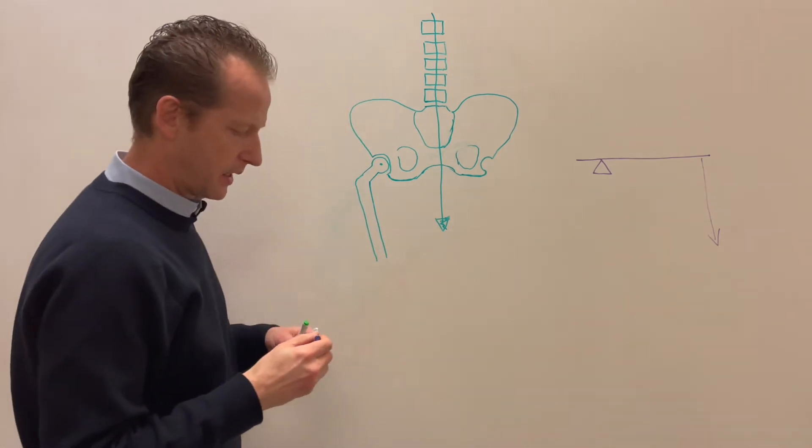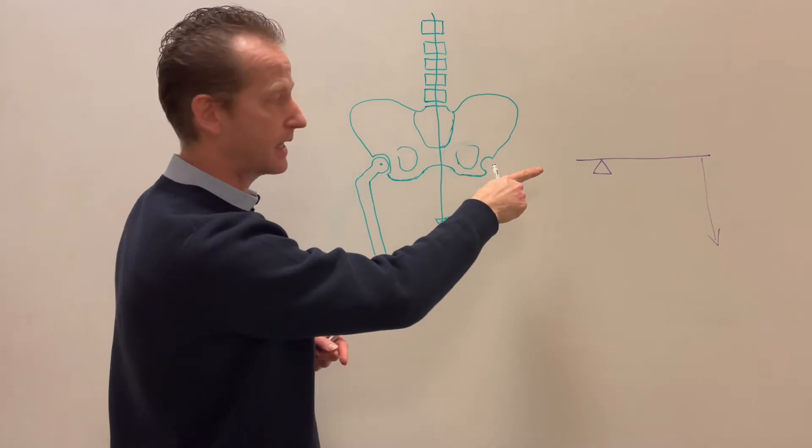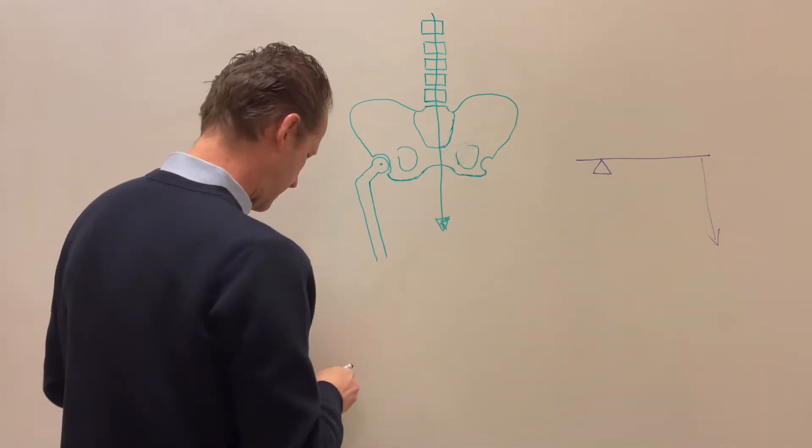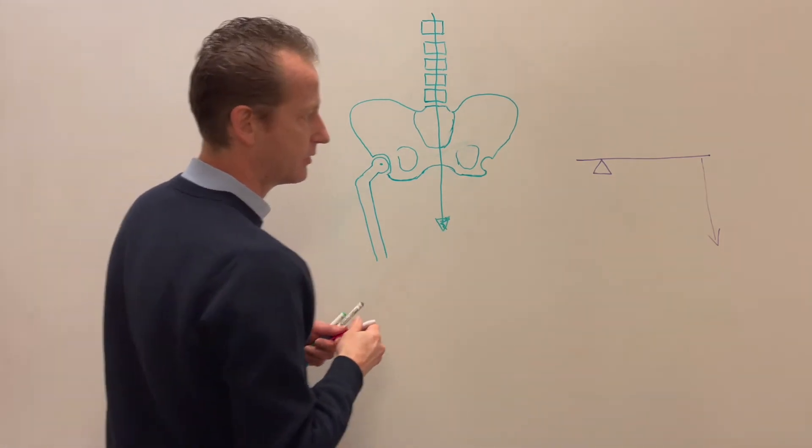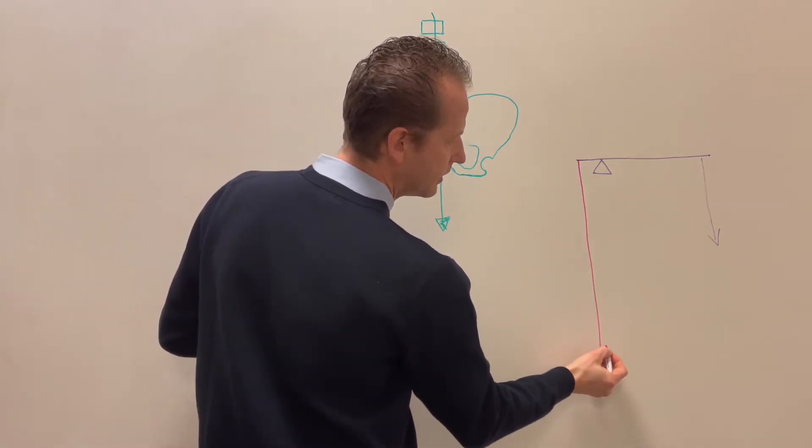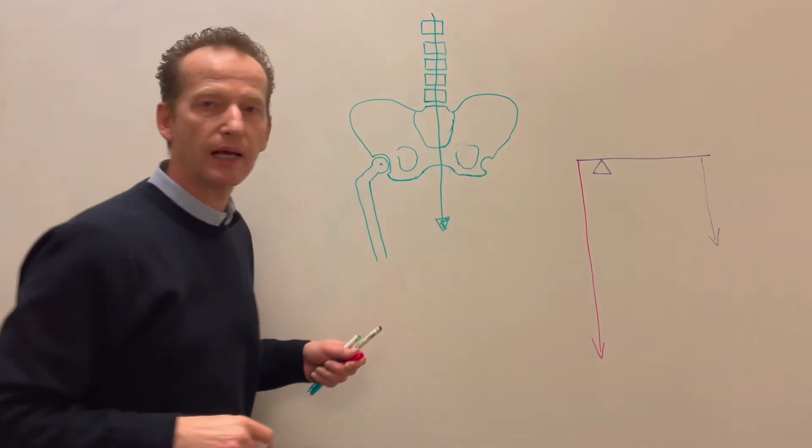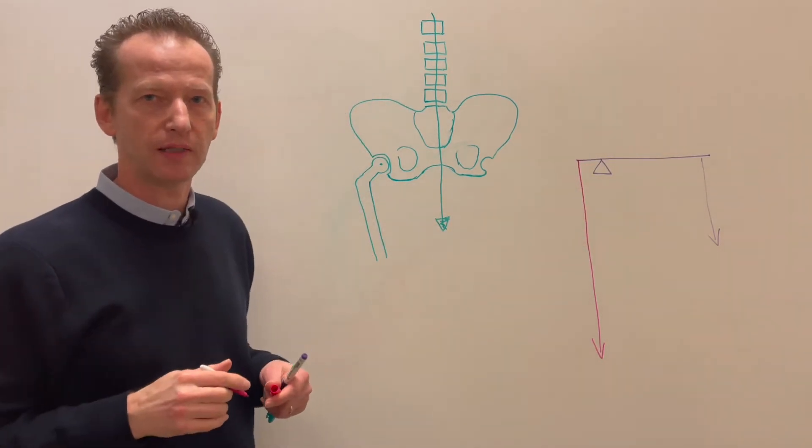So you can see, in order to counter this, if you wanted to balance this scale, you would need to have a tremendous amount of force pushing on the other hand of the seesaw in order for these two forces to equalize themselves and the pelvis to remain straight.